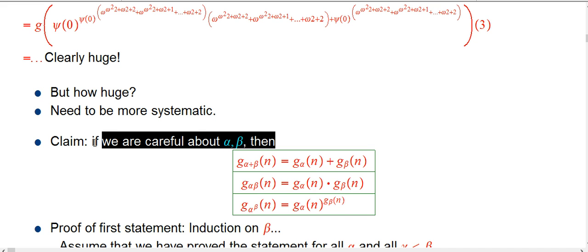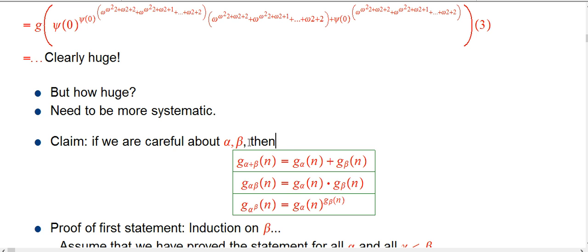The claim here is that if we're careful in a certain way about alpha and beta, then G respects basically addition, multiplication, and ordinal exponentiation. In other words, G sub alpha plus beta of n is just the sum of G alpha of n plus G beta of n. Same for products and same for exponents. We're going to use these rules quite a bit.